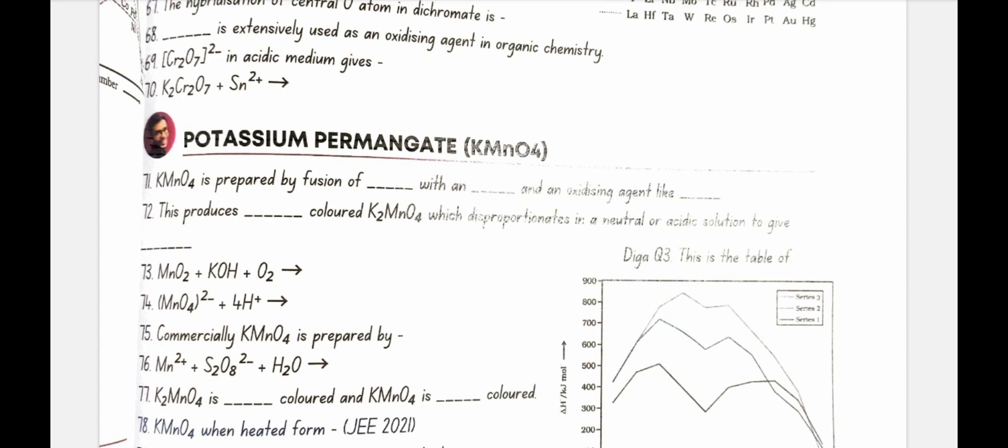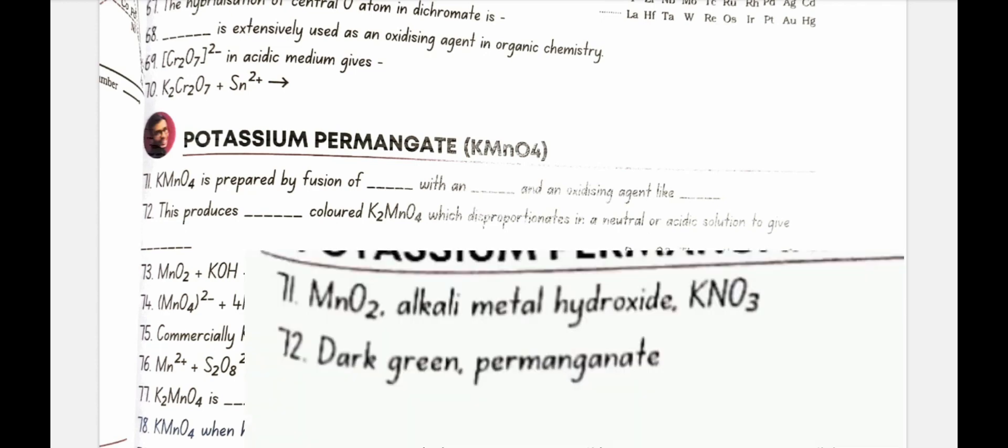Potassium permanganate KMnO4. KMnO4 is prepared by the fusion of MnO2 with an alkali metal hydroxide and an oxidizing agent like KNO3. This produces dark green colored K2MnO4 which disproportionates in a neutral or acidic solution to give permanganate.